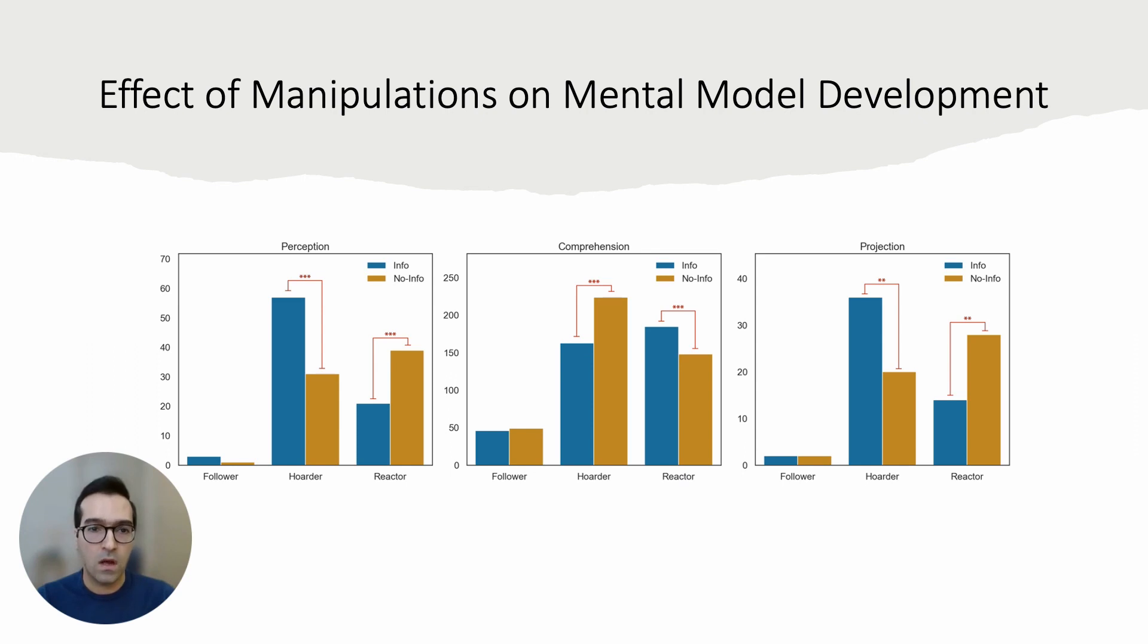By counting the players' comments that reflected each aspect of situation awareness, we could see differences in mental model development of players depending on the level of information sharing. Hoarders showed, as you can see here, more perception, less comprehension, and also more projections when they had access to information. Reactors represented quite the opposite pattern by showing less perception, more comprehension, and less projections.